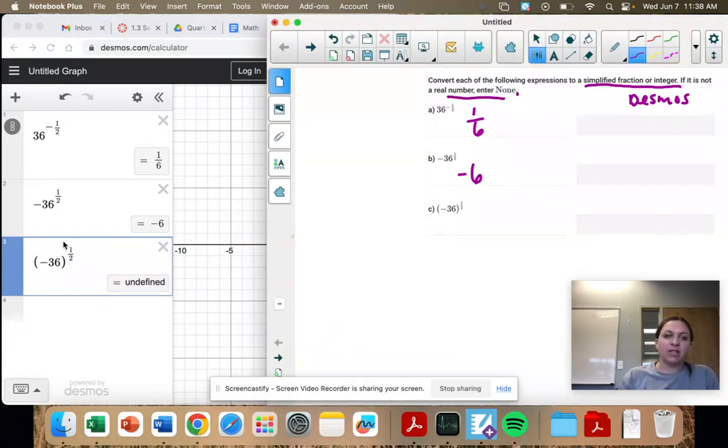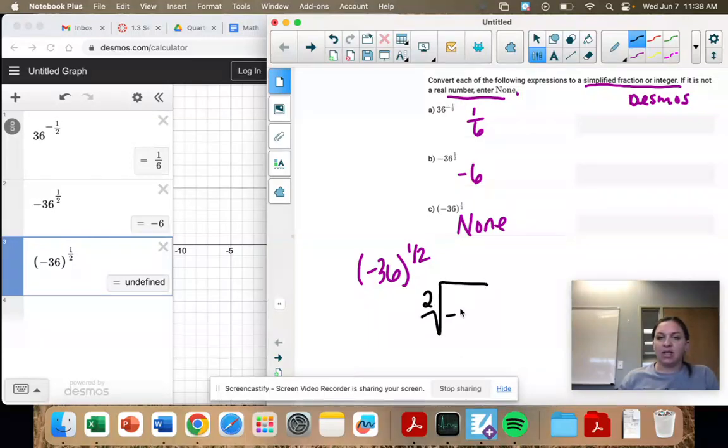That's because we can't take the square root of a negative number. And anything to the one-half power is a square root. So if I were to rewrite that as a radical, the two would be my index, and then the negative 36 would be under the square root. And we can't have a negative square root.